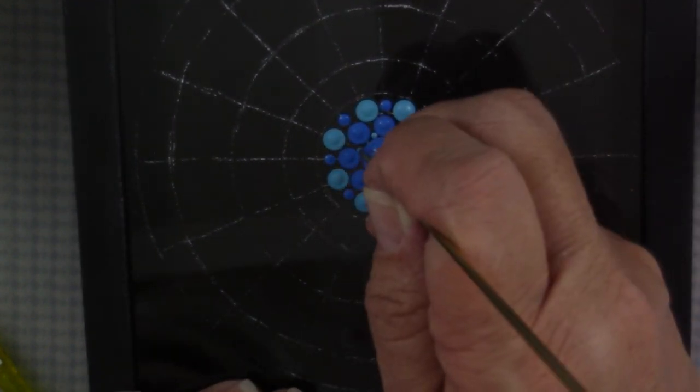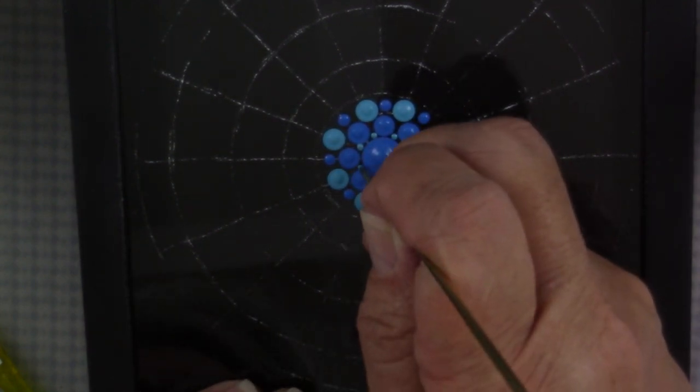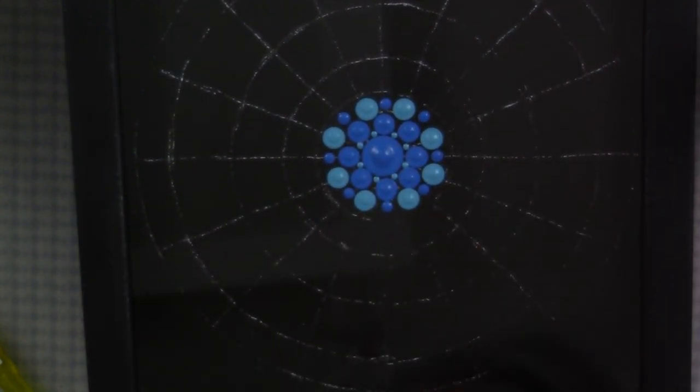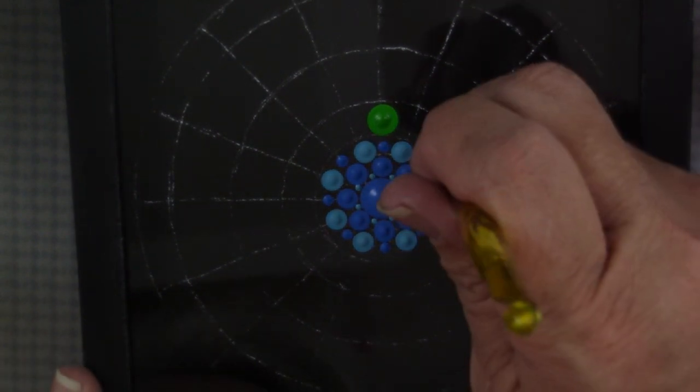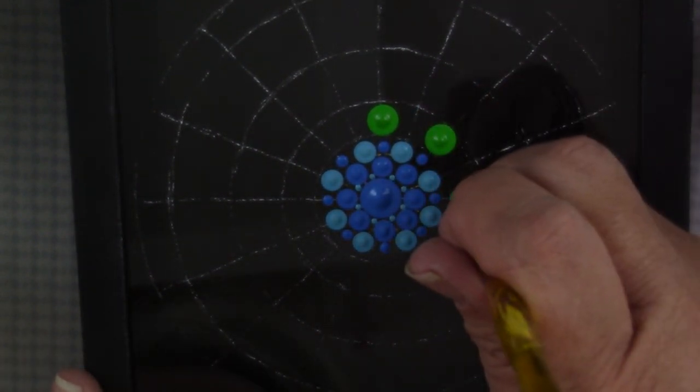I used a smaller tool to place some dots. Now I'm using my J10 6mm to put the bright green, and I'll just get those all placed.